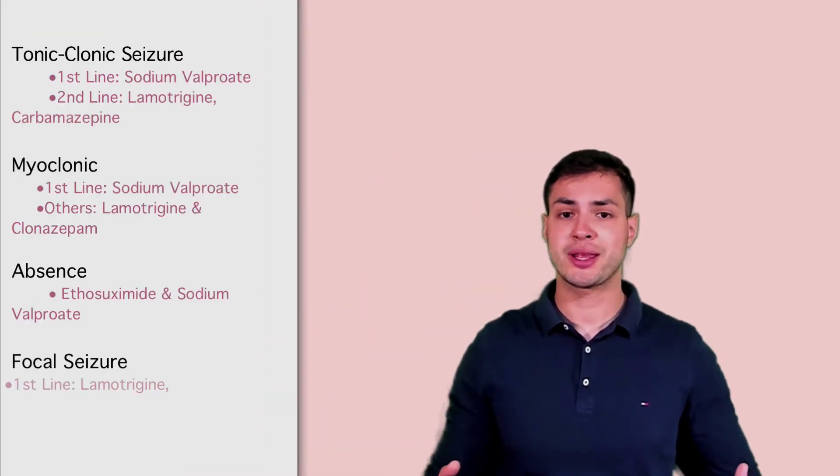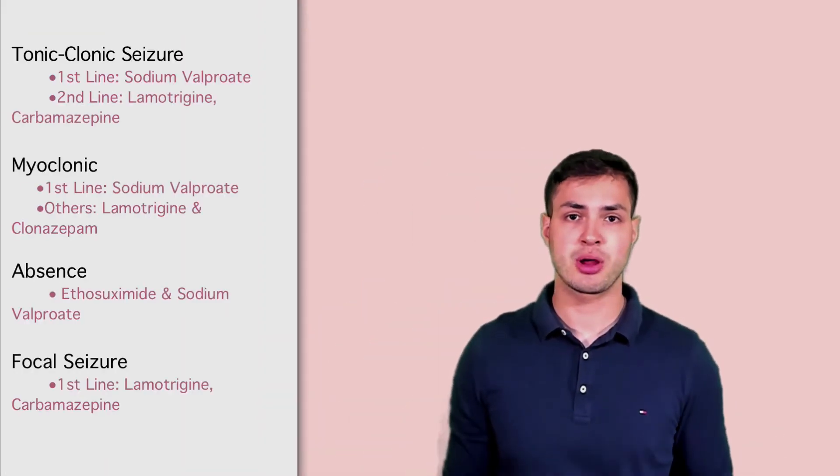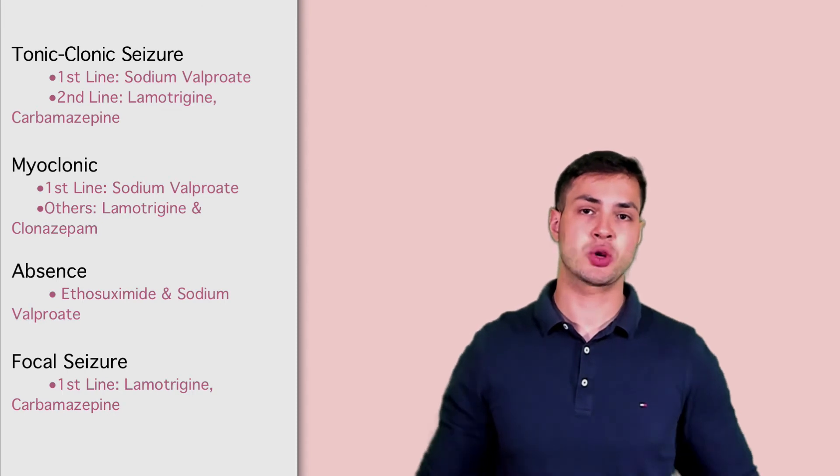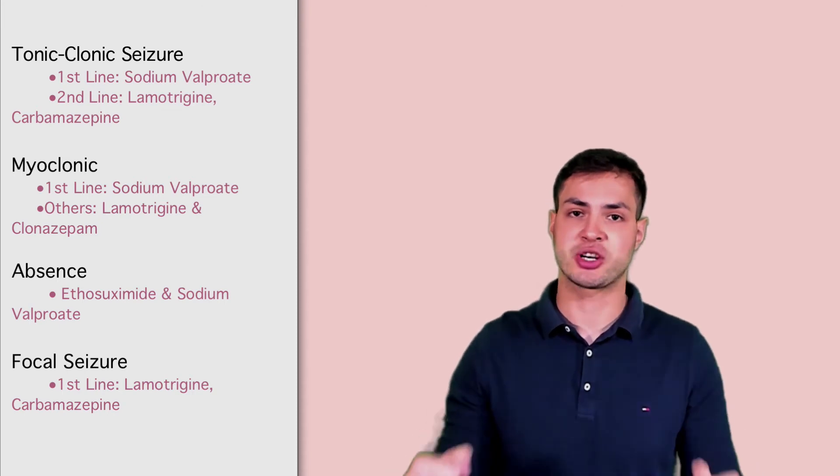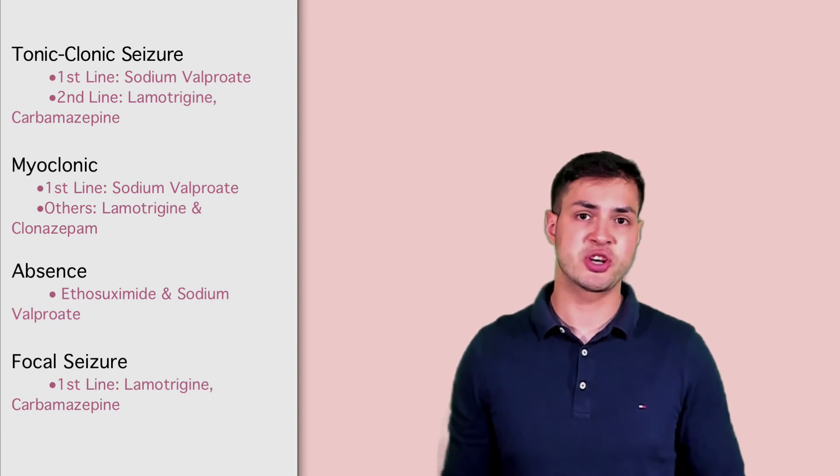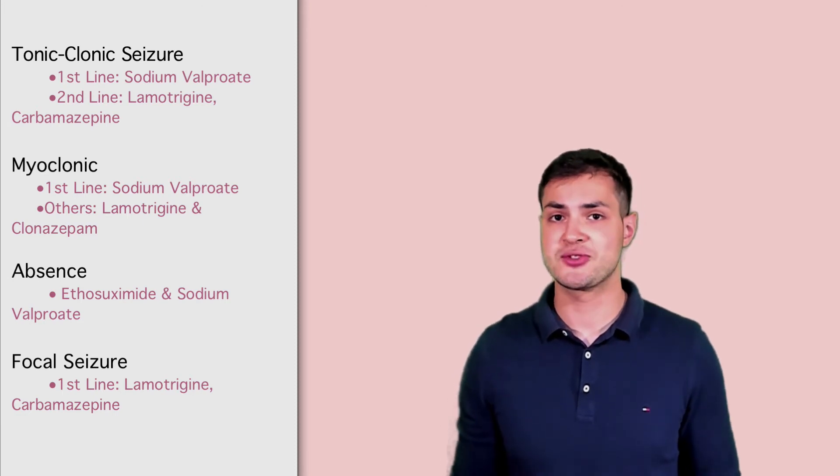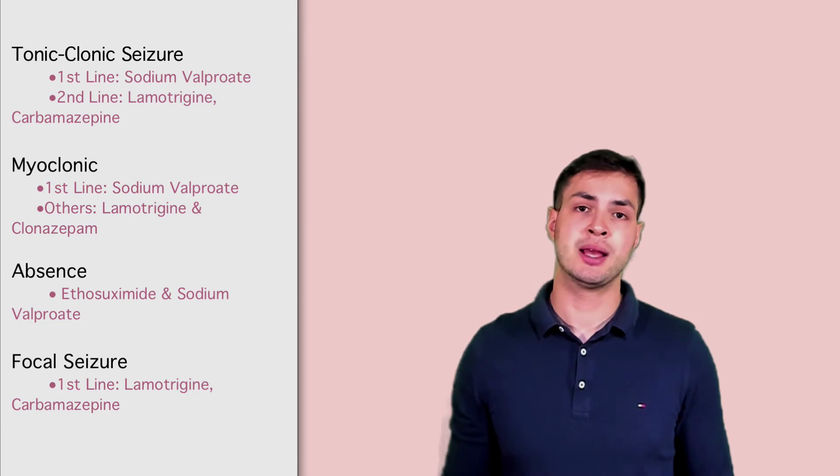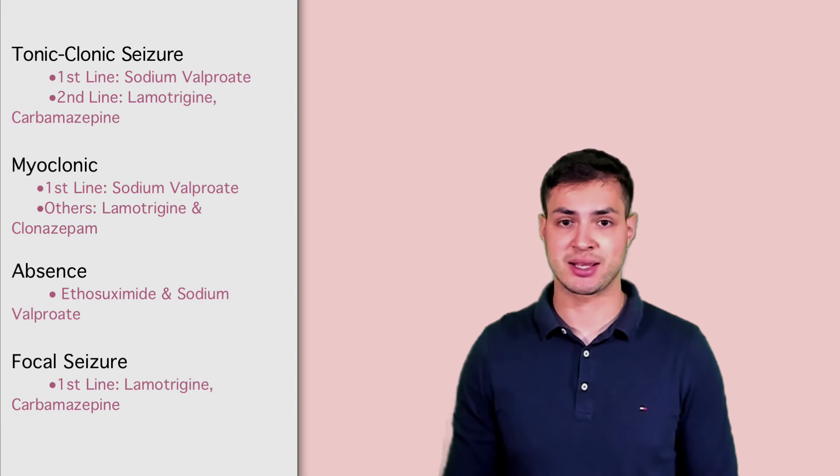So the first seizure we'll talk about is a tonic-clonic seizure. That's the most common seizure you'll come across. What happens is tonic means it stiffens and then you start getting jerks. So this is stiff and jerk. Really what I want to talk about is treatments. The treatment for a tonic-clonic seizure, first line is usually sodium valproate. Unless you're a female of childbearing age, then you want to use lamotrigine in that case because it's not teratogenic.